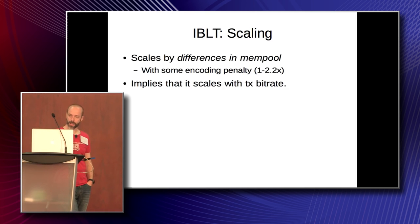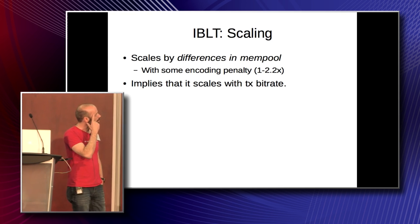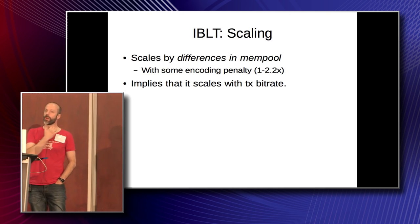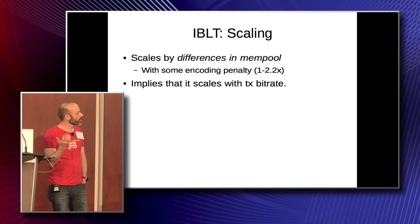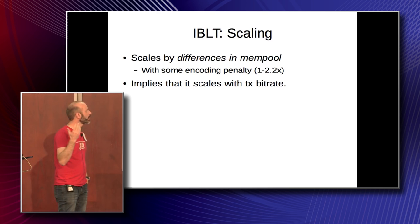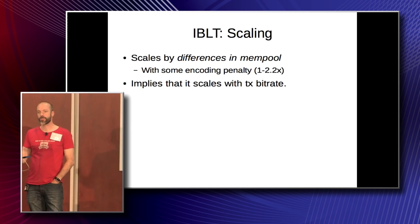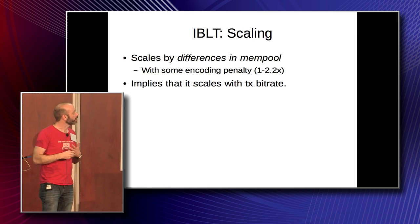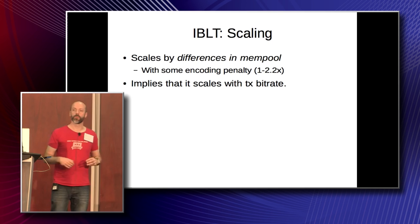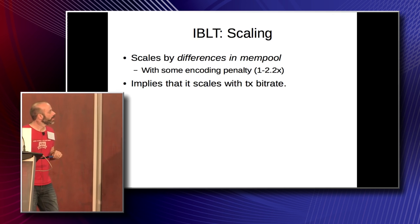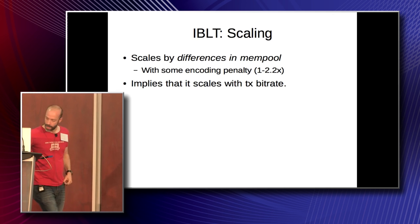So the question then comes down to scaling. How well does this kind of approach scale? It scales as the difference in mempool with some factor. Obviously, if you knew exactly what the other person didn't have, that would be the most efficient way. There's some encoding penalty for throwing blocks into the IBLT depending on whether there are extra or missing transactions — the rate is about a 1 to 2.2 factor. The difference in mempool roughly scales with the transaction bit rate: the more transactions flowing through the network, the more likely you are to have missing or extra transactions in the other person's mempool.